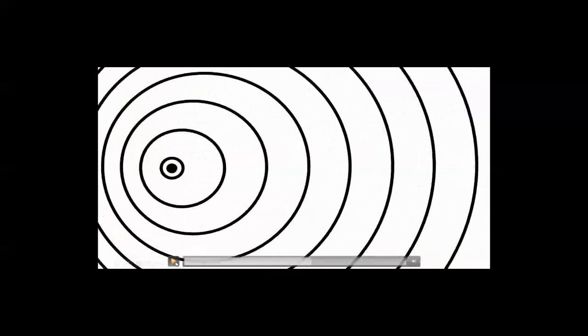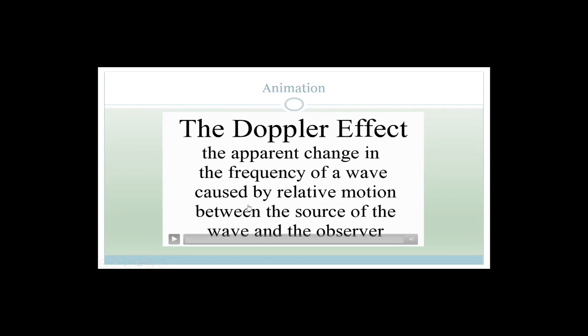When the single source starts moving in one direction, the wavefronts in the direction of motion get compressed, while the wavefronts behind get further and further apart. So the Doppler effect is the apparent change in frequency of a wave caused by the relative motion between the source of the wave and the observer. Now you are in grade 12, so when it comes to your definitions, you need to look at your exam guidelines — they have all the definitions perfectly worded for matric.